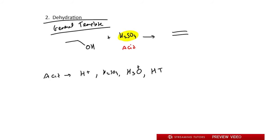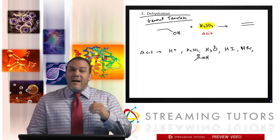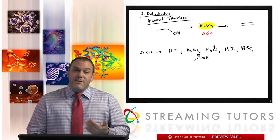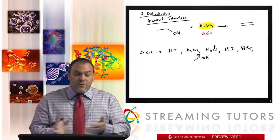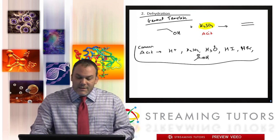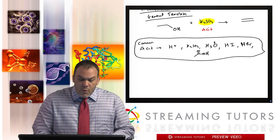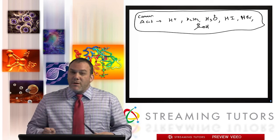The acid could also be a carboxylic acid — there are many acids you can use. Alcohol has a pKa of 16, so anything with a pKa less than 16 will act as an acid here. The ones listed are the most common, but not the only options by any means.